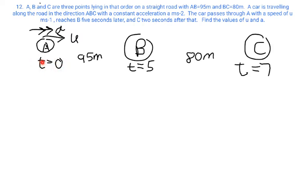We know that at time zero, we have a velocity of U and an acceleration of A. At B, five seconds later, we've travelled 95 metres. And two seconds after that, so that's time seven seconds, we've travelled another 80 metres to C. And that's all we know. It seems there's a distinct lack of information here, and there is. In this question, we're going to have to use some simultaneous equations.